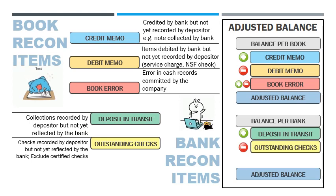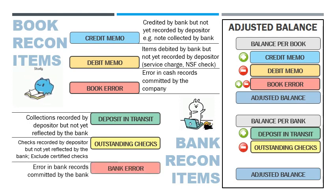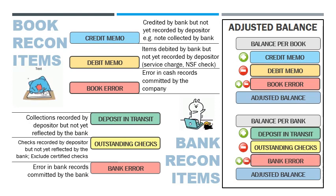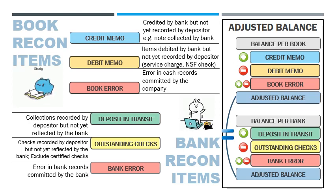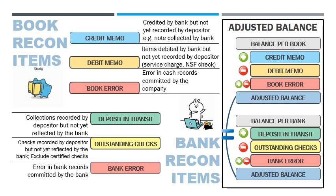Last are bank errors, which are added or deducted depending on the nature of the error. Take note that the adjusted cash balance should be the same regardless of whether you start with the cash balance per books or cash balance per bank. The crucial point here is knowing which items are book reconciling items and which ones are bank reconciling items.